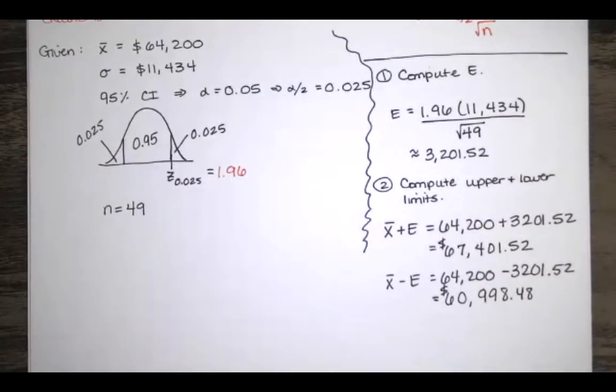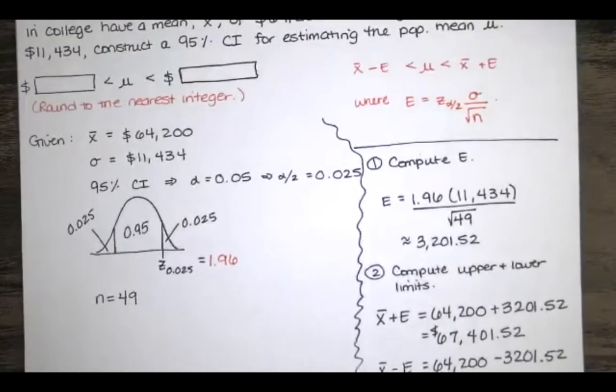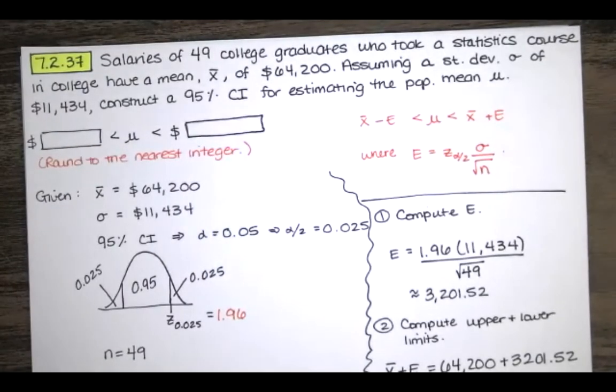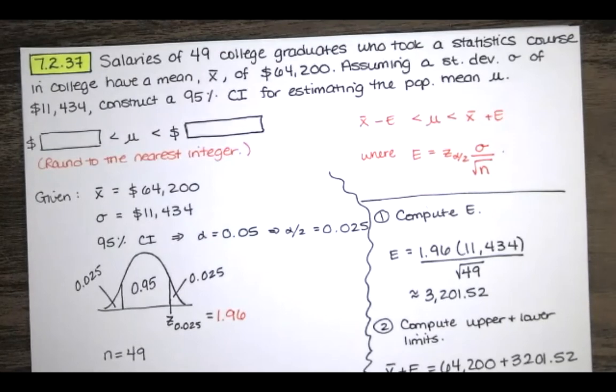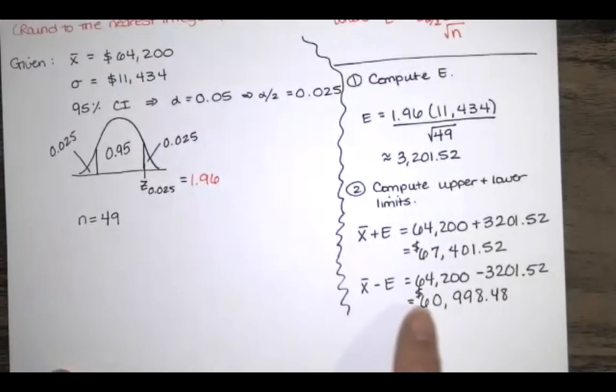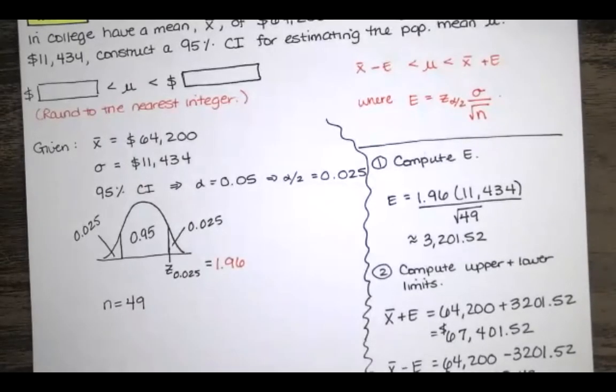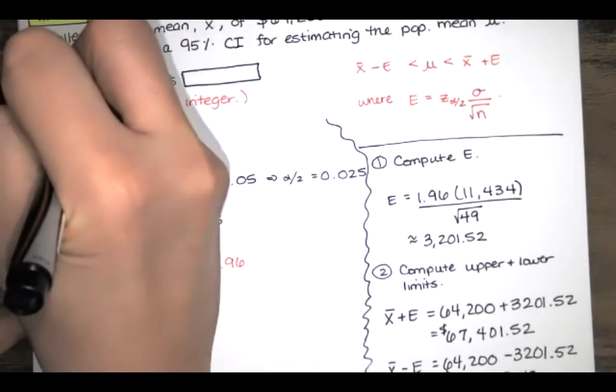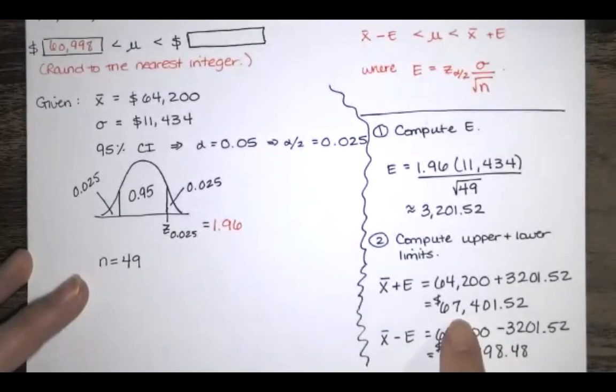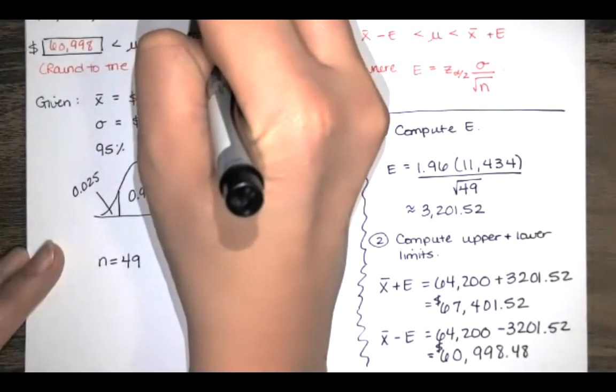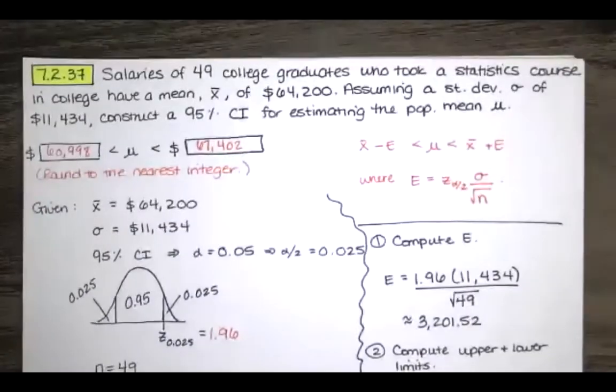Now that we've got our upper limit and our lower limit, then we go to the original question. And we're told to find that confidence interval estimate of the true population mean. The true population mean is between this $60,998 and 48 cents. We're asked to round to the nearest integer. So $60,998 to this value, $67,401 and 52 cents and we'll round up. So $67,402 in that case.